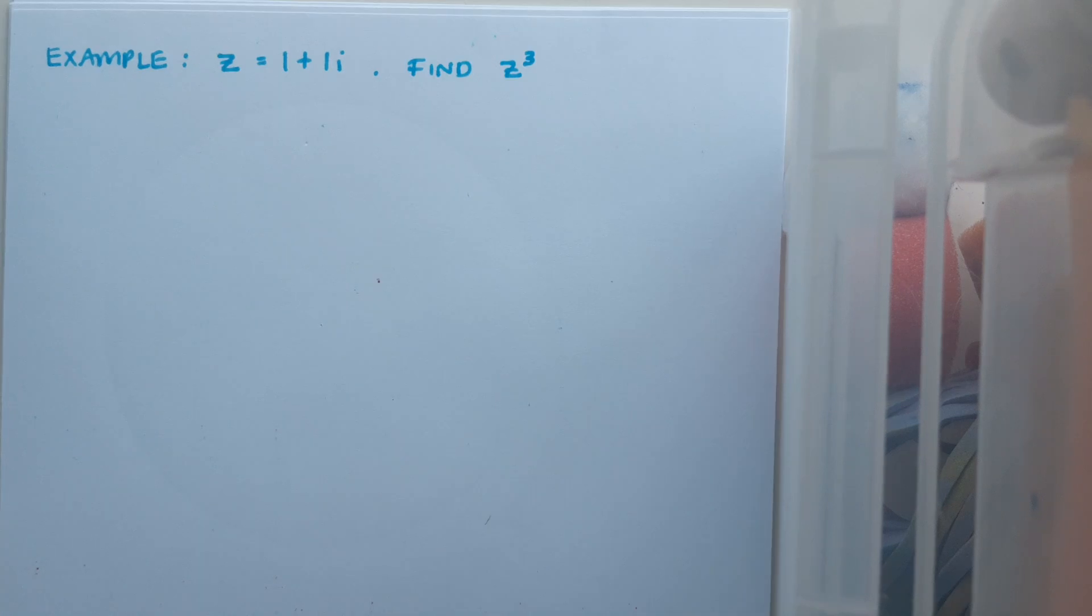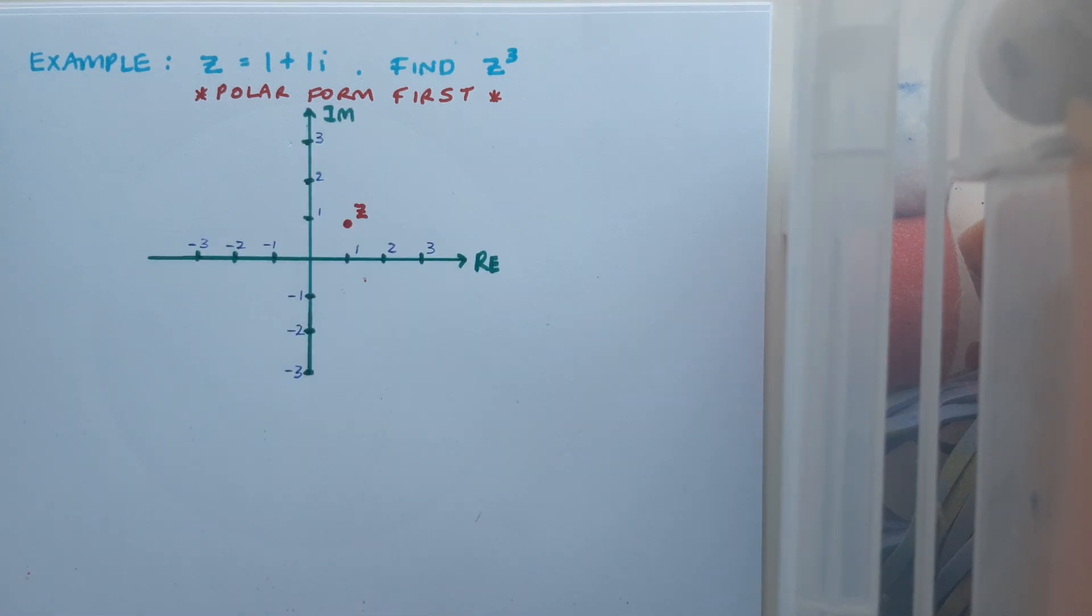So here's an example: z equals 1 plus 1i, and I want to find z cubed. I'm going to start by changing my z into polar form. To do that, I'm going to begin by drawing an Argand diagram. So I've begun by representing z on the Argand diagram, and of course, then to get polar form, I'm going to draw in my modulus and my argument.